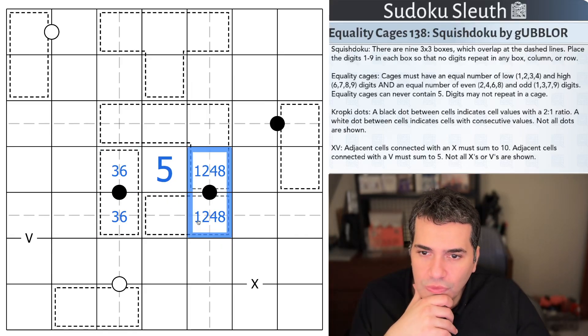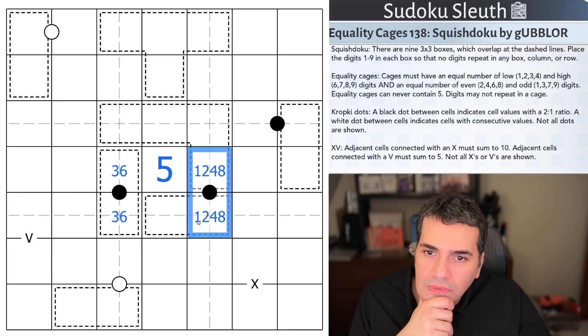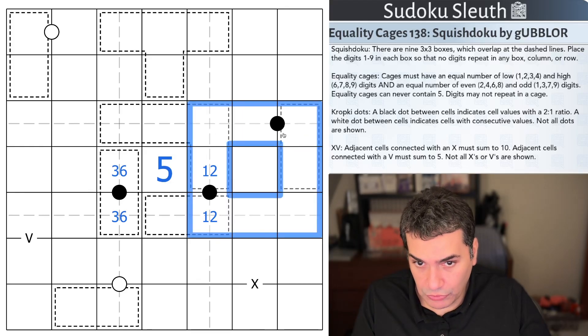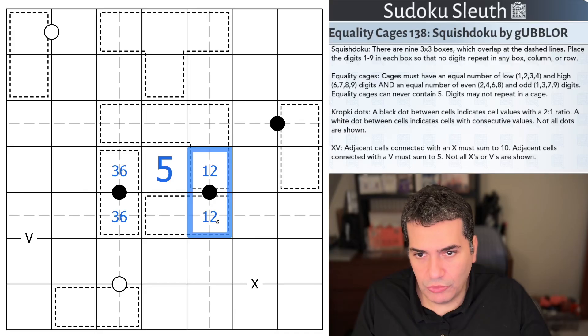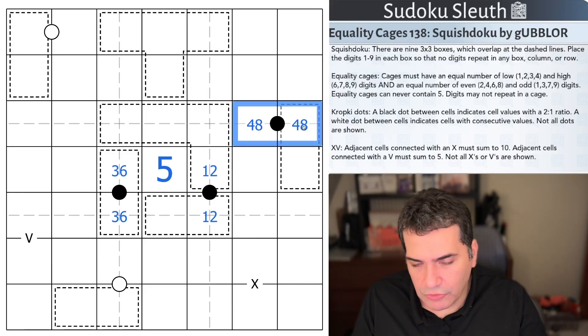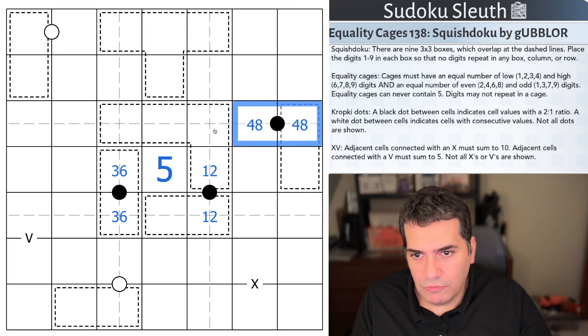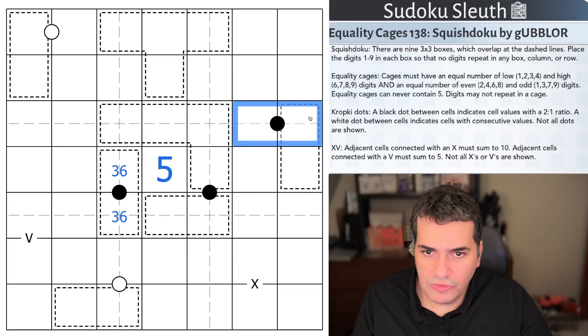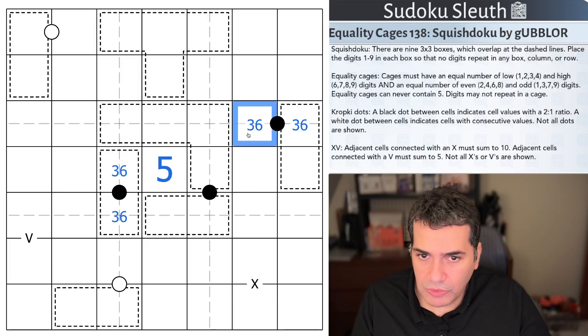3-6 in this box now. In this box, here's a much more obvious thing. Equality cages, and remember, the equality cages cannot contain 5. Where is a 5 in the middle box? Here's our first digit in under a minute. You know you're in for a good time when you can actually place a digit almost immediately. These black kropki dots are going to be 1, 2, 4, 8 because they're not 3-6.